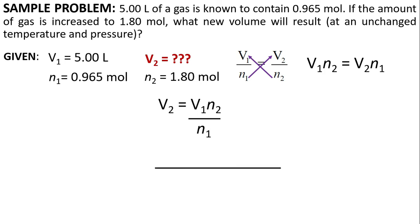So, now, substitute the values. This will give us 5 liters times 1.80 moles over 0.965 moles. So, canceling the units, we will have liters.